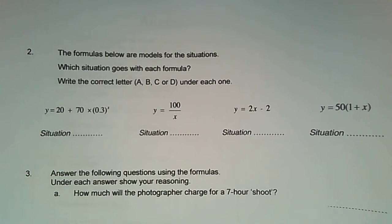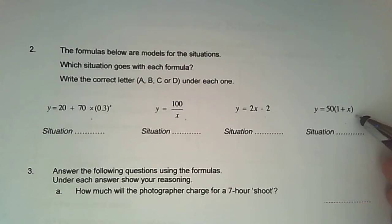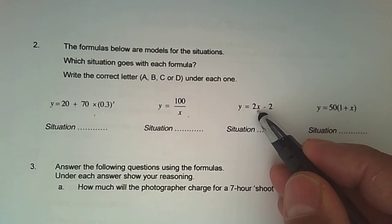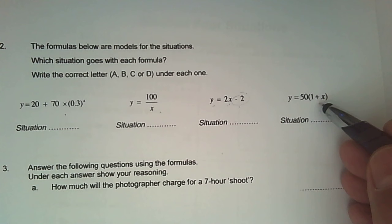So which one of these equations on the next page could that situation be? So not linear, not linear. The difference between these two, 2x subtract 2, and 50 times 1 plus x. So there's a fixed fee to begin with. So even before you start, when you plug in zero, there's an initial fee to begin with, a y-intercept.